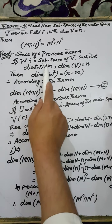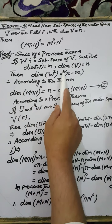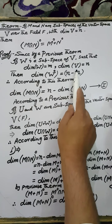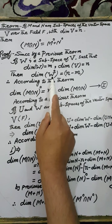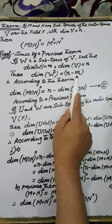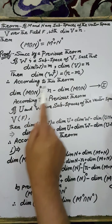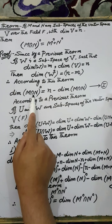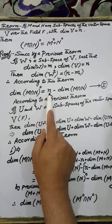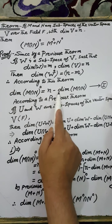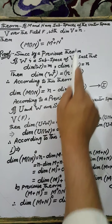By a previous theorem, if W is a subspace of the vector space V such that the dimension of the subspace W is m, and the dimension of the vector space V is n, then the dimension of the set of all annihilators of W is n minus m. Therefore, according to this theorem, the dimension of the set of all annihilators of M intersection N is equal to n minus the dimension of M intersection N, where n is the dimension of the vector space V.